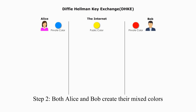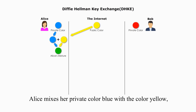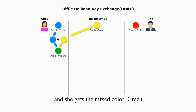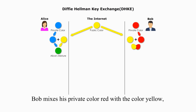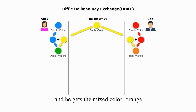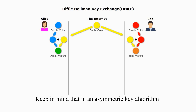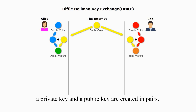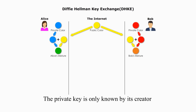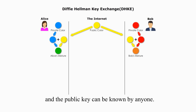Step 2. Both Alice and Bob create their mixed colors. Alice mixes her private color blue with the color yellow, and she gets the mixed color green. Green is like her public key. In the same manner, Bob mixes his private color red with the color yellow, and he gets the mixed color orange. Orange is like his public key. Keep in mind that in an asymmetric key algorithm or public key algorithm, a private key and a public key are created in pairs. The private key is only known by its creator, and the public key can be known by anyone.